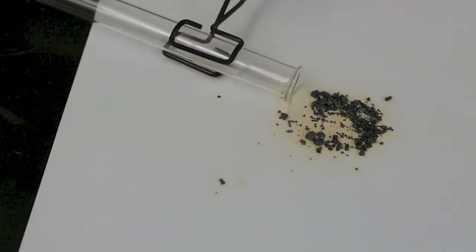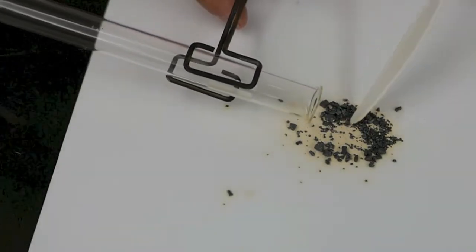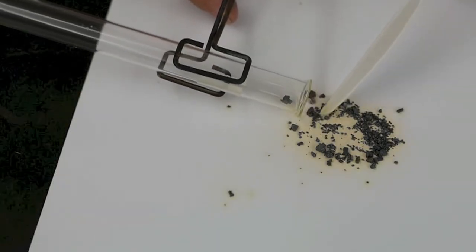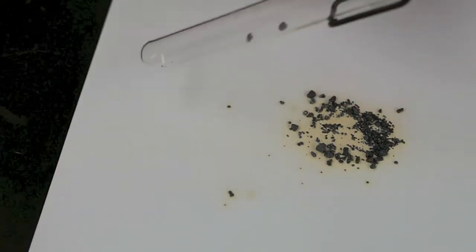In the next step, what I'd like to do is heat some iodine and observe the results. So I'm just going to use a couple really small crystals. I'm going to put them in this test tube, and then we're going to put it over a low flame.